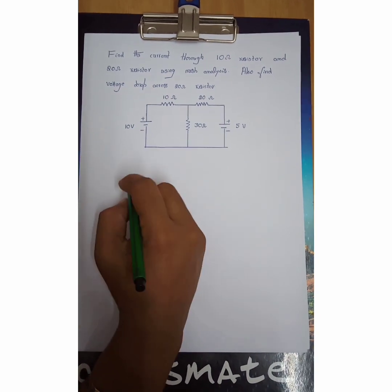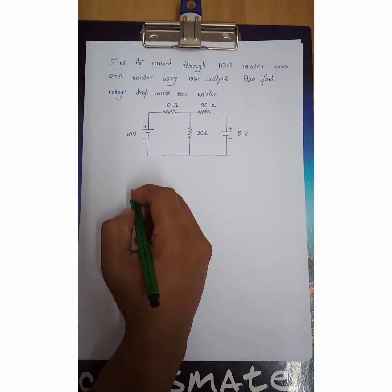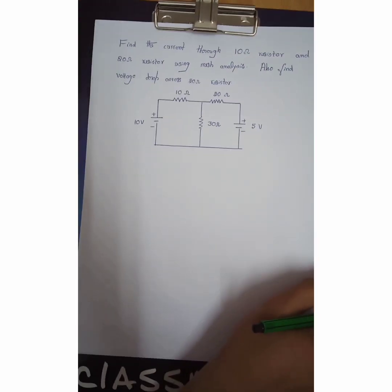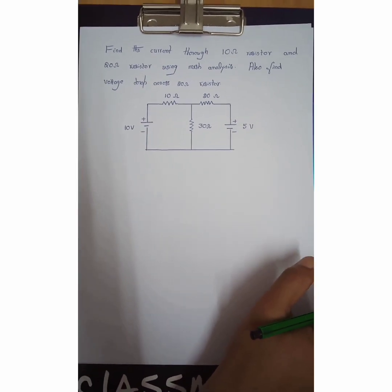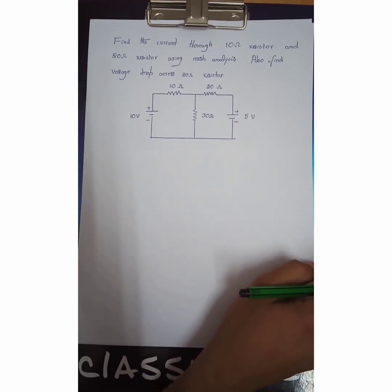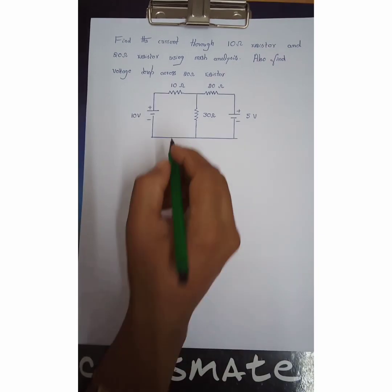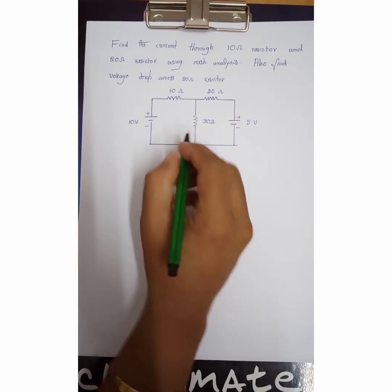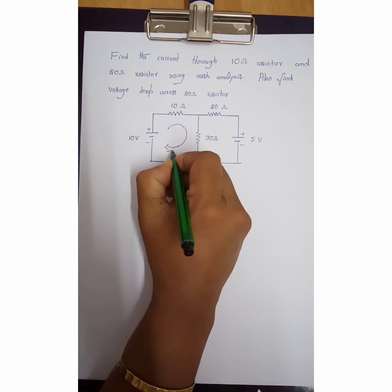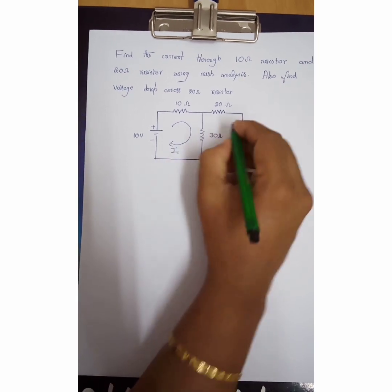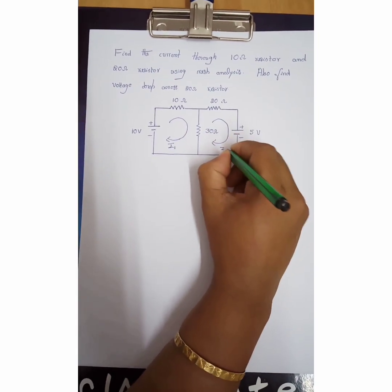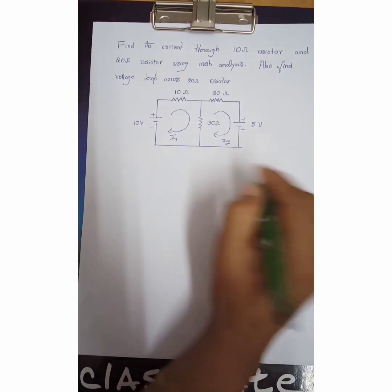The circuit is given here. To begin with the solution, we first assign the loop currents for the given two loops. I will take the first loop current as I1 and the second loop current as I2. This is the first step of assigning current.